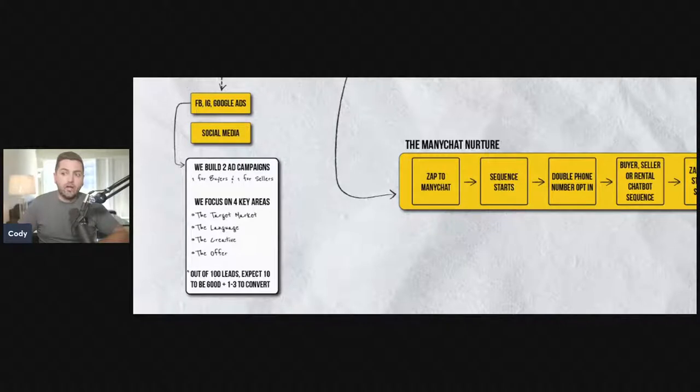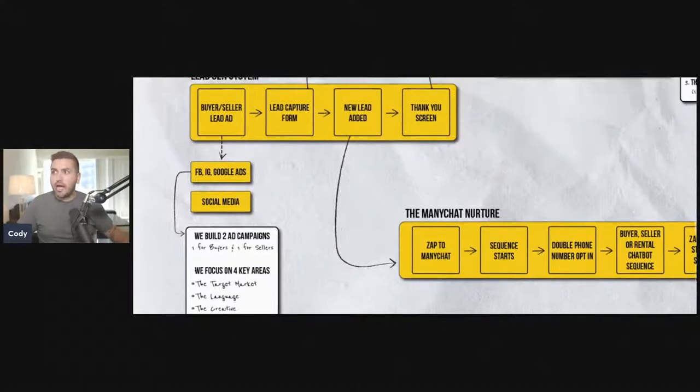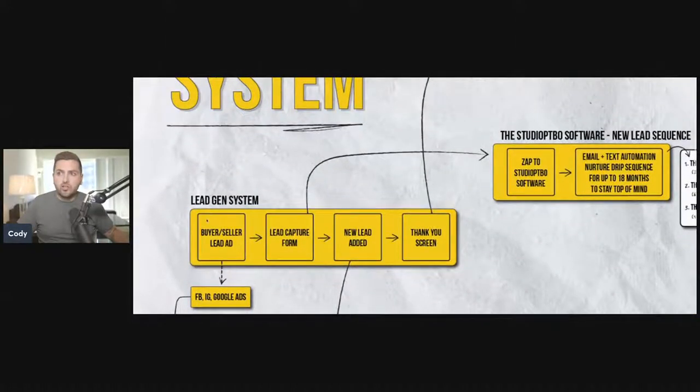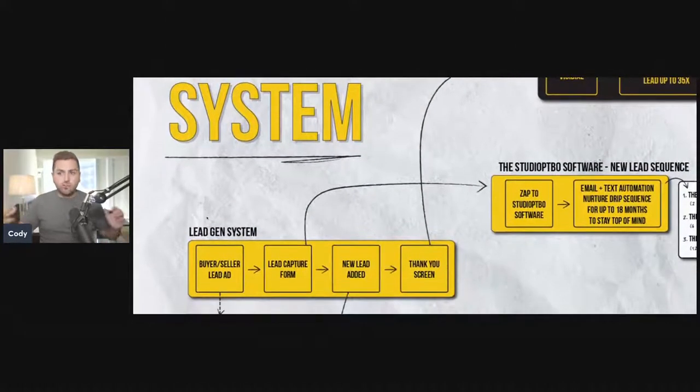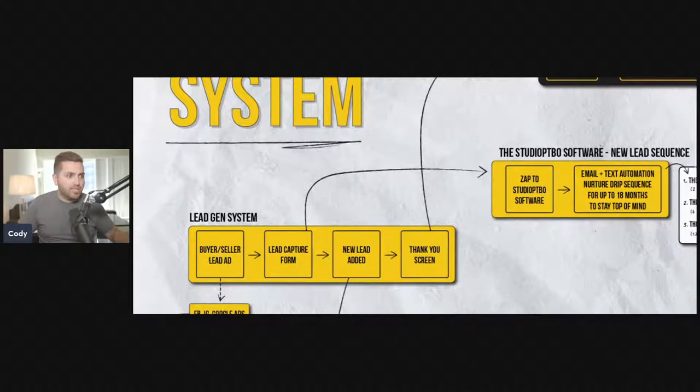Generally what we tell our clients is out of 100 leads, expect 10 to be good and 1 to 3 to convert. If we generate 100 leads, we should be expecting anywhere between 10 to 20 appointments. This is a system that is designed to work on autopilot for you.